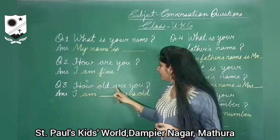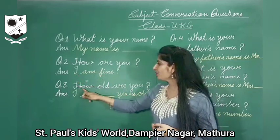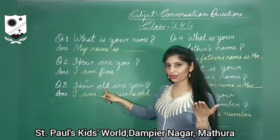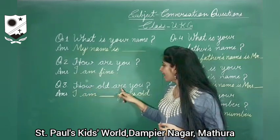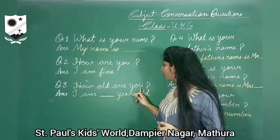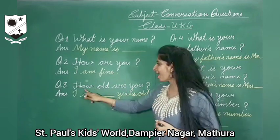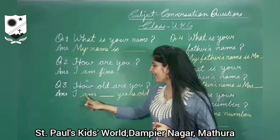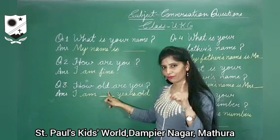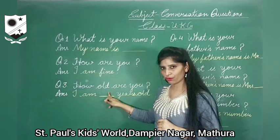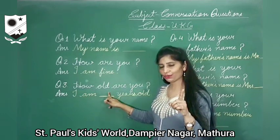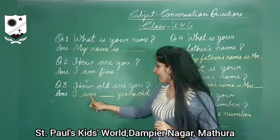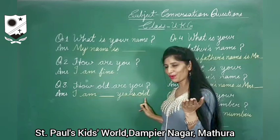Next: How old are you? H-O-W, how, O-L-D, old, A-R-E Y-O-U. How old are you? Answer: I am four years old. If you are four years old, you can write four. If you are five years old, you can write five. I am five years old.